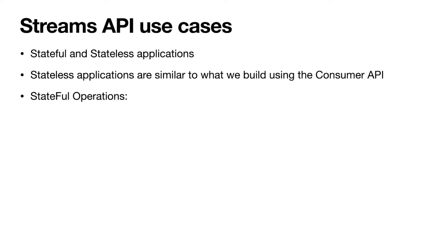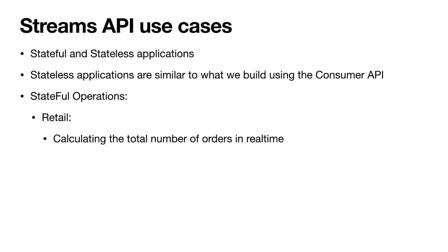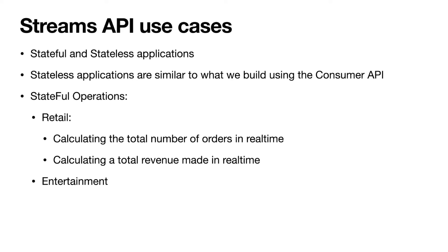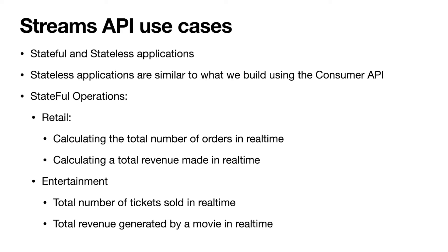Now let me talk about the stateful applications that can be built using Kafka Streams API. In retail, we can use Kafka Streams API to calculate the total number of orders in real time, or calculate the total revenue made in real time. The word real time is really key here, because we can calculate as the orders flow through the system in real time — which is really powerful in today's market. In the entertainment field, we can build applications to calculate the total number of tickets sold for a given movie in real time, or the total revenue generated by the movie in real time. These are really interesting use cases for stakeholders who want to know how the market is performing in real time.